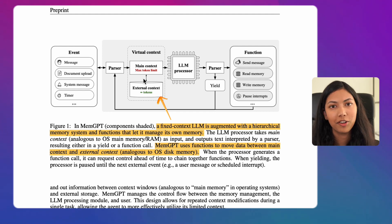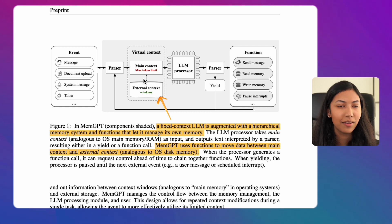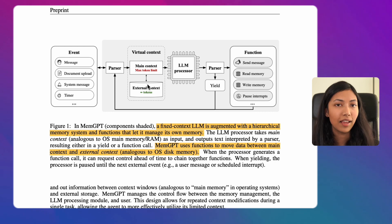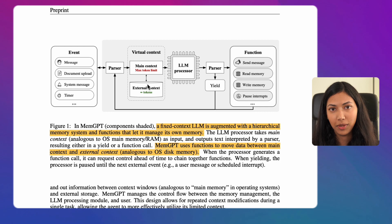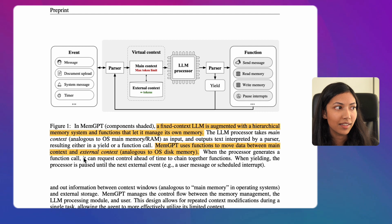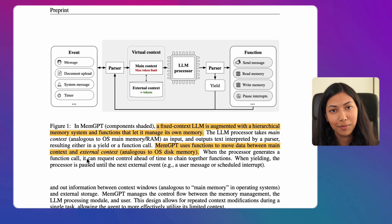The second part of MemGPT is something called external context, and this is arguably the most important part because it enables MemGPT to have unlimited memory. The external context acts like virtual memory in an operating system — it has an unlimited amount of tokens you can store depending on the database you're using. Between the main context and external context, data is transferred and this transfer is controlled by something called functions.